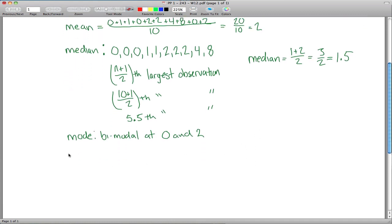Range, range is another kind of stupid one in my opinion. All the range is, is the difference between the biggest and the smallest. Biggest is 8, smallest is 0, 8 minus 0 is 8, is the range.